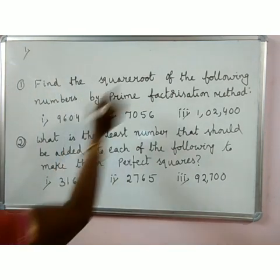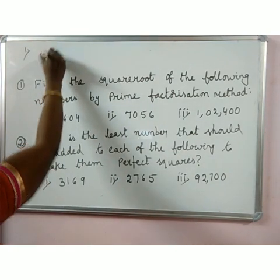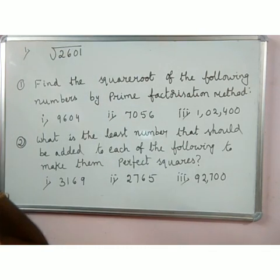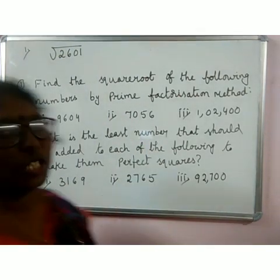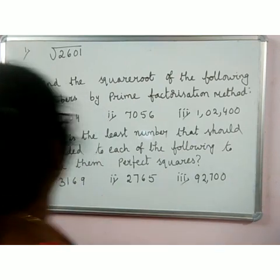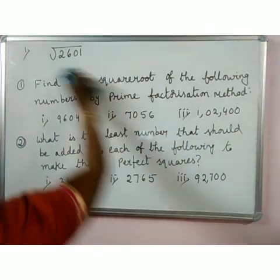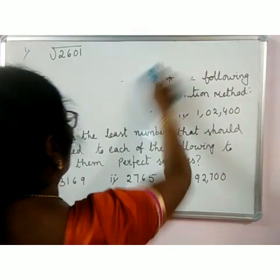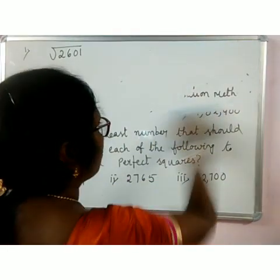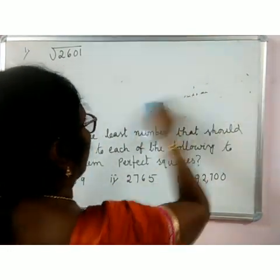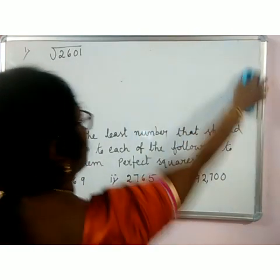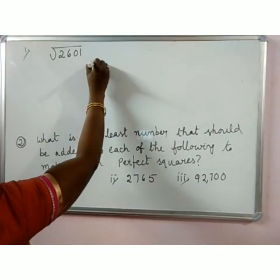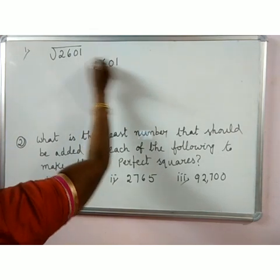For question one: find the square root of 2601 by using the prime factorization method. Let me explain that now. For this variety, you have to find the prime factors of the given number — not in rough, just inside only.